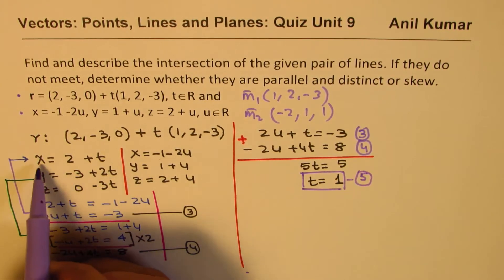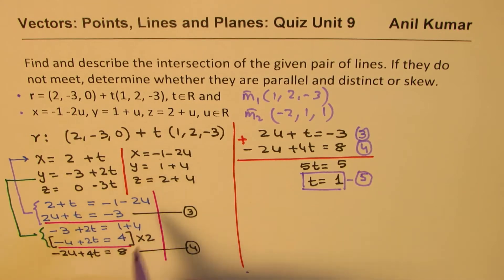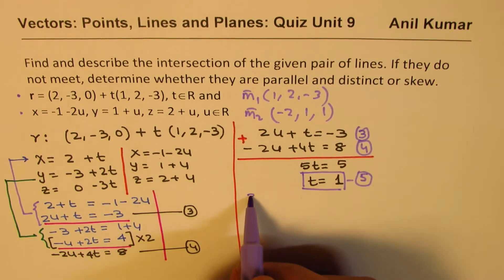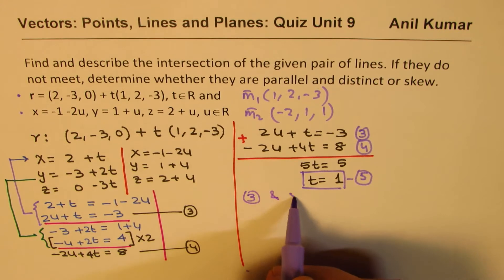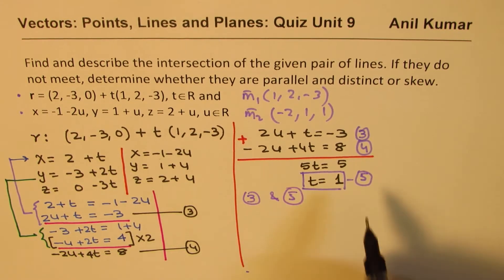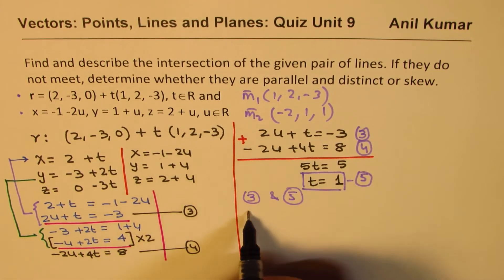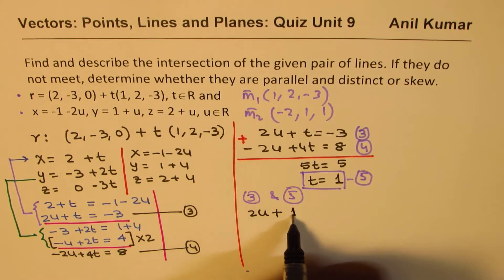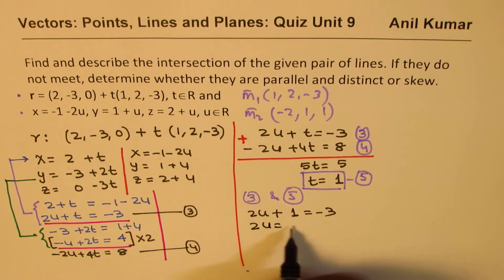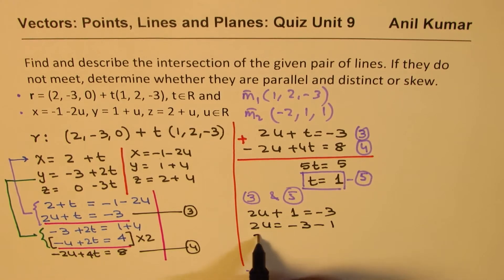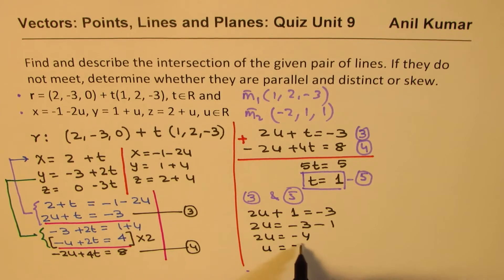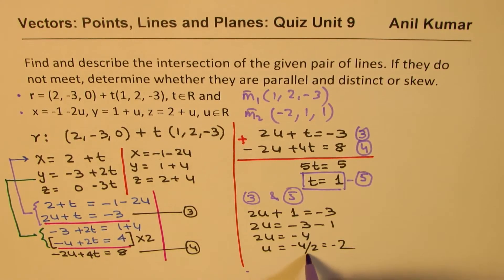So let's substitute this value of t and find U from one of our equations. So I'm going to substitute this value of t in equation 3. So we'll do equation 3 and 5. In 3, we have 2U + t. So instead of t, I'm writing 1 = -3. So 2U = -3 - 1. 2U = -4. U = -4/2, which is -2. So we get a value of U as -2.